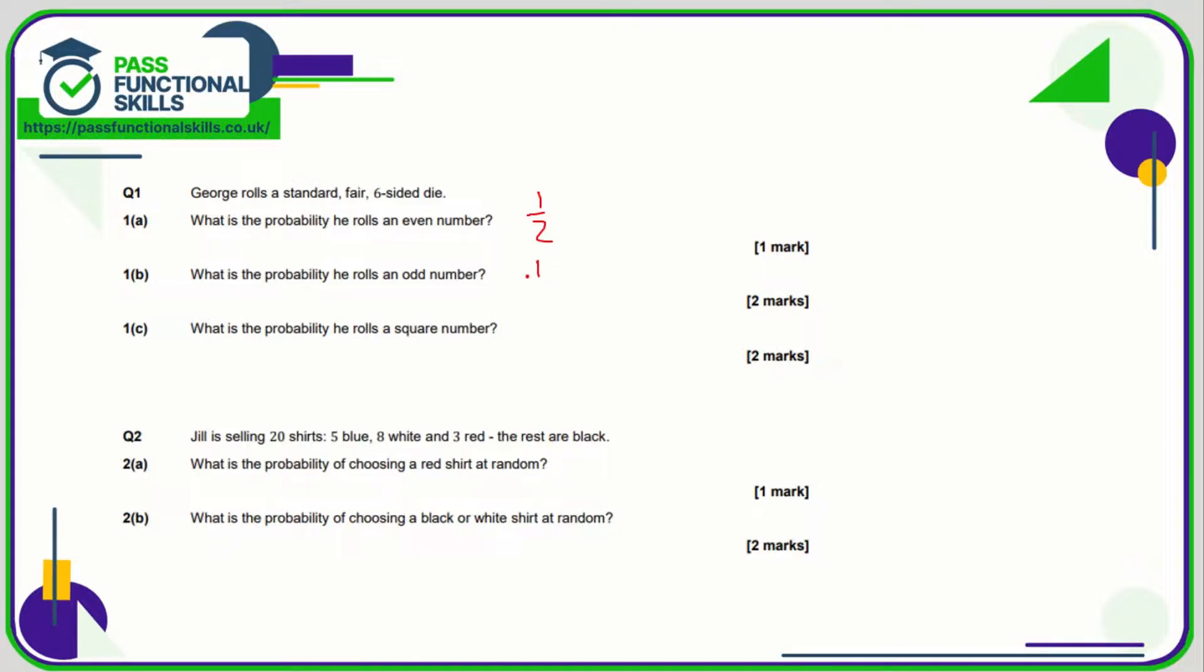The square numbers on a die where you've got numbers one to six—well, one is a square number and so is four, so that's two out of the six are square numbers and that is the same as one third. Question number two: out of the 20 shirts, what's the probability